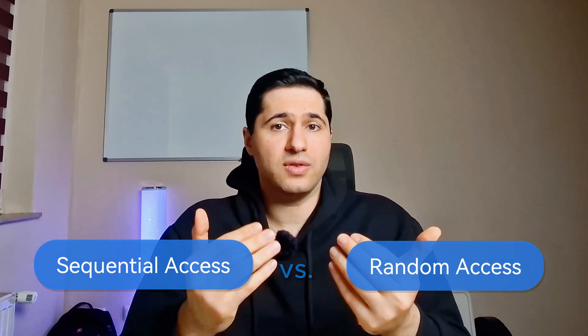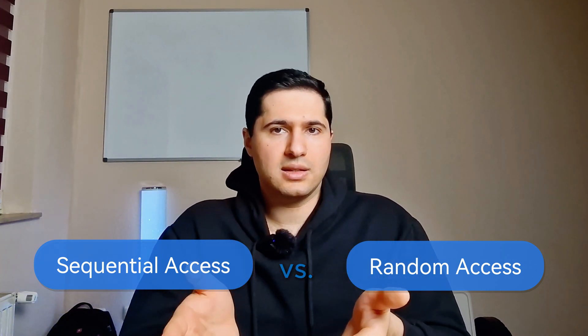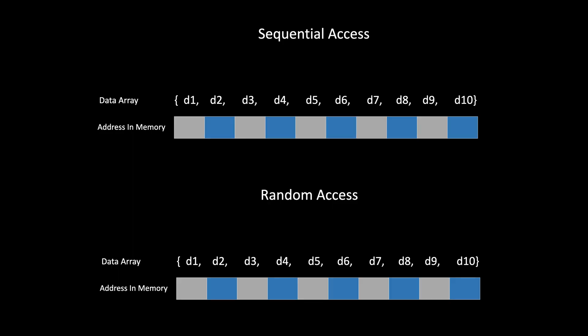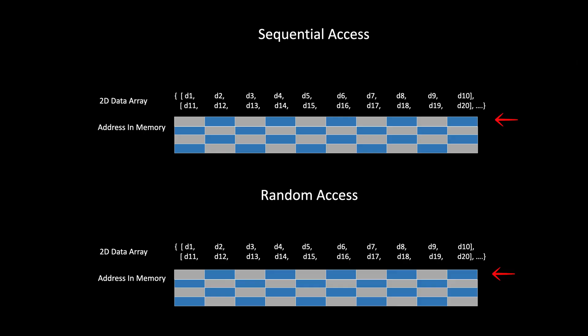So why does this all matter for you as a programmer? The way you structure your code indicates how efficiently it will use memory. Accessing data sequentially — for example, reading array elements one by one — is much faster than random access. That's because sequential access takes advantage of spatial locality, meaning the addresses of array elements are adjacent in memory. Random access, on the other hand, causes cache misses, which means higher latency in your program. For example, in a 2D array, accessing it row by row is sequential and efficient, but jumping from column to column causes potential cache misses, essentially using random access.